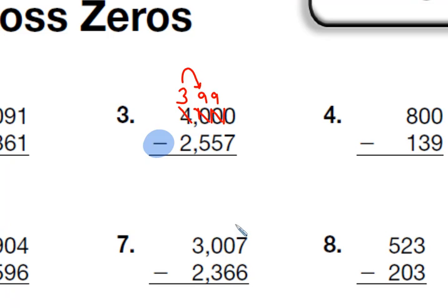So now we can go ahead and subtract all the way across. 10 take away 7 is 3. 9 take away 5 is 4. 9 take away 5 again is 4. And 3 take away 2 is 1. So our answer is 1,443.